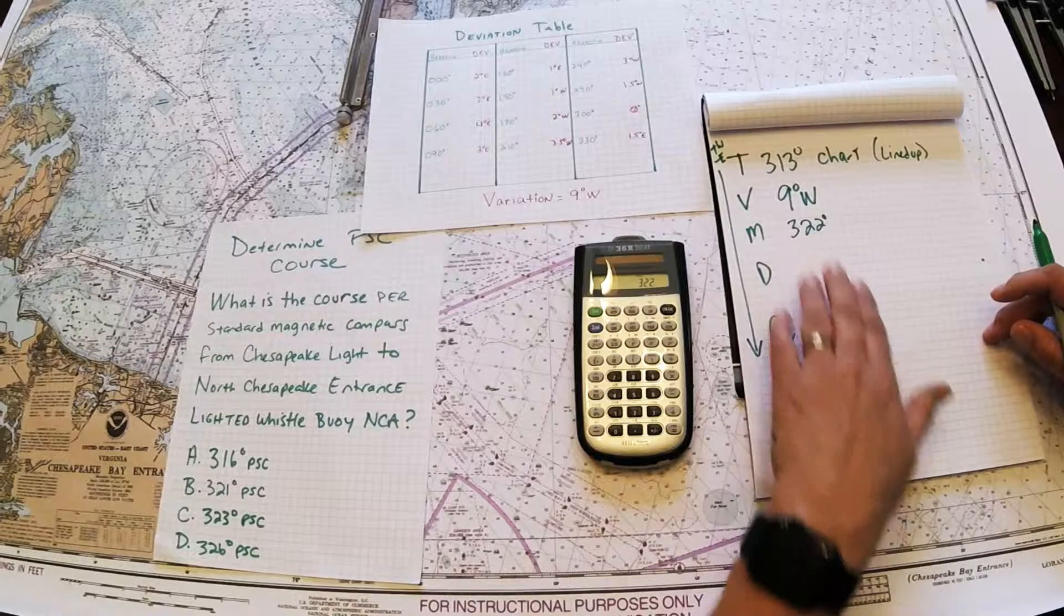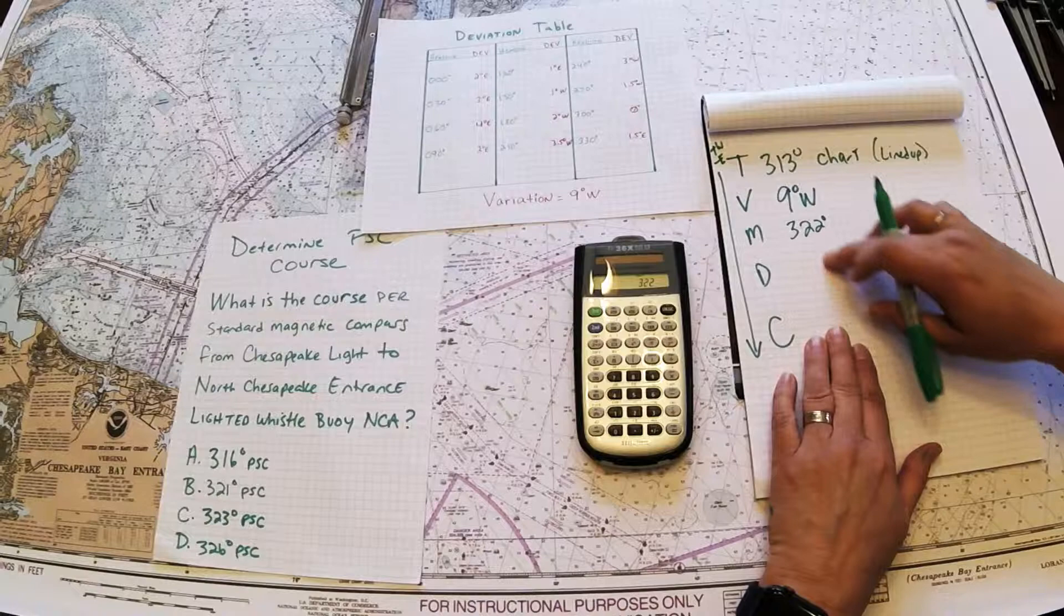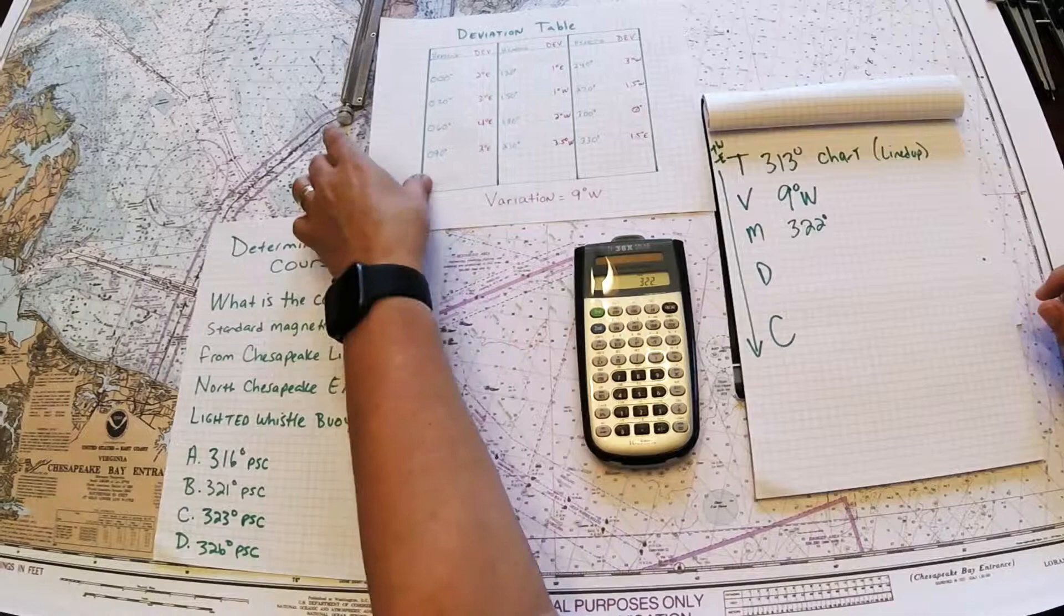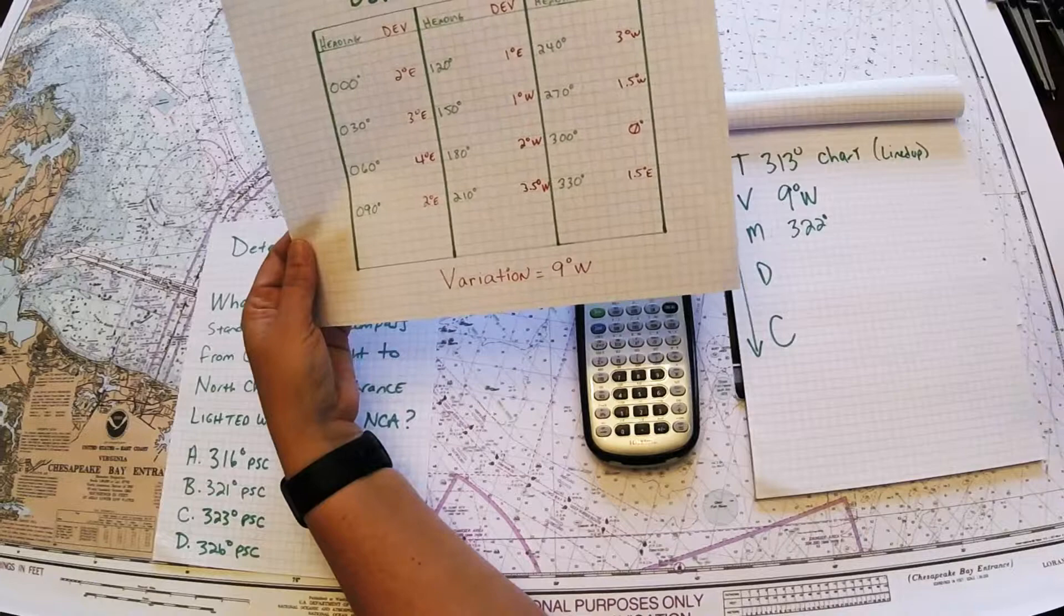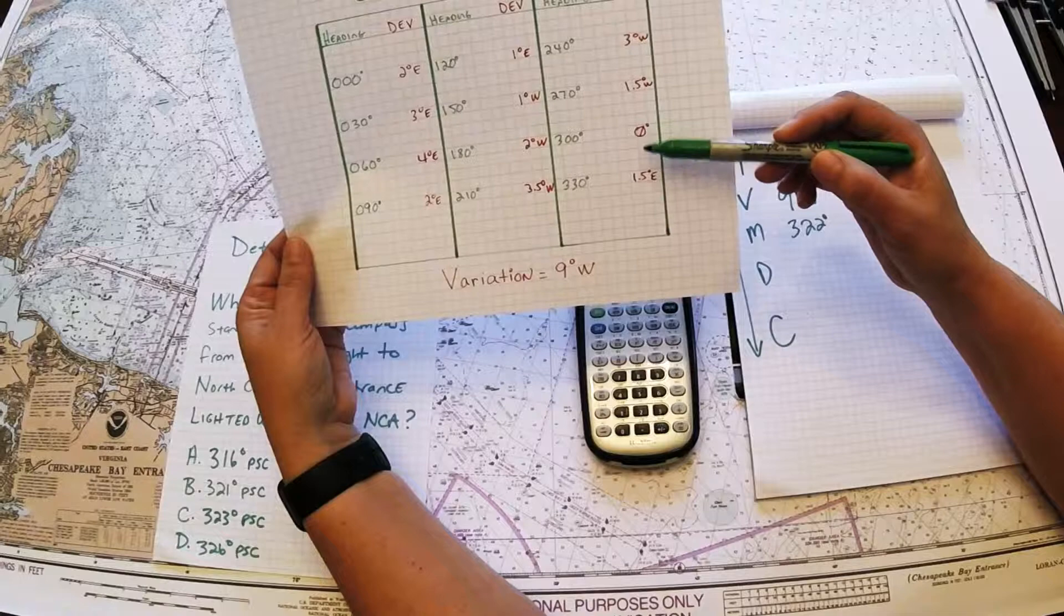We've got some error here caused by deviation, the magnetic properties on the boat. So we need to go ahead and get it down to compass. So I'm going to go back to my table and I'm going to look up 322. Now 322 falls between 0 degrees deviation and 1.5 east deviation.